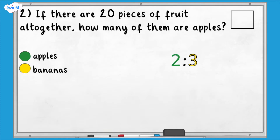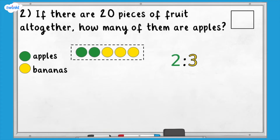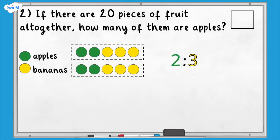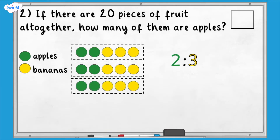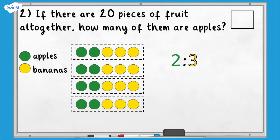In the original ratio, we have five pieces of fruit. We want the total to be 20 pieces of fruit. We can create multiple groups and the ratio will stay the same. Now we have 10 counters altogether. Now we have 15 pieces of fruit altogether. Now we have 20 pieces of fruit altogether. We can see that if there are 20 counters altogether, eight of them are green, so there would be eight apples.